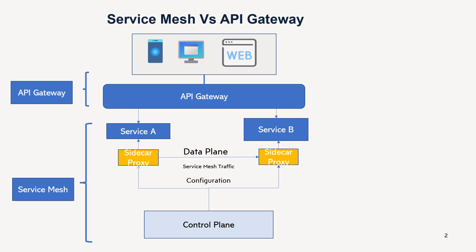So let us look at our application, which is basically having some client like mobile, browser, or desktop, and it is connecting to our application via API Gateway. We also have the Service Mesh internally configured where all the services are talking to each other via a sidecar proxy.